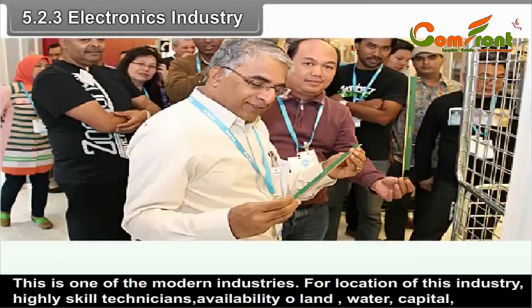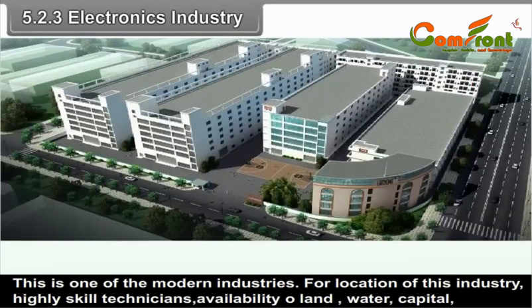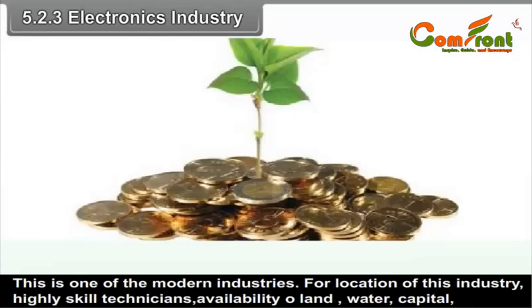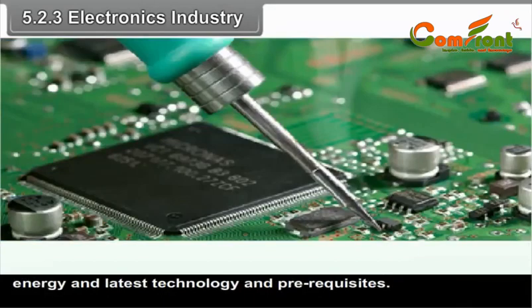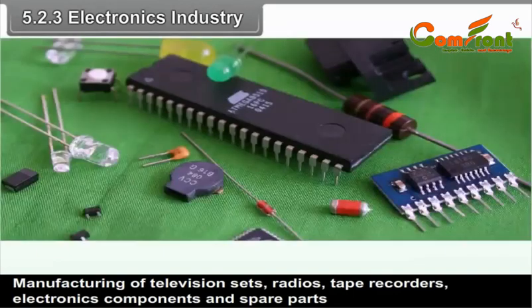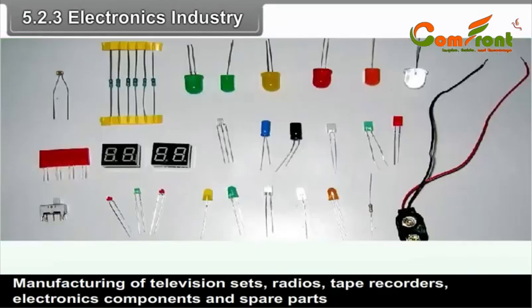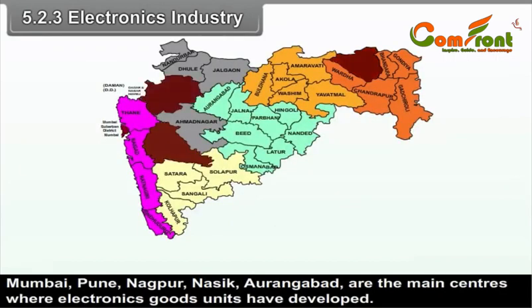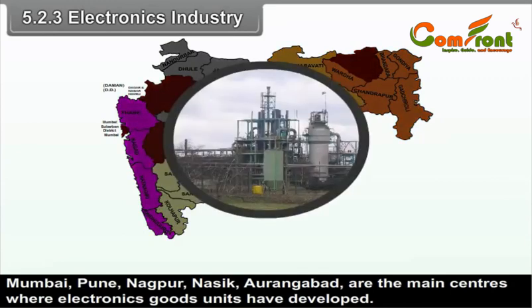5.2.3 Electronics Industry. This is one of the modern industries. For location of this industry, highly skilled technicians, availability of land, water, capital, energy and latest technology are the prerequisites. Manufacturing of television sets, radios, tape recorders, electronic components and spare parts come under electronic industry. Mumbai, Pune-Chinchwad, Nagpur, Nasik and Aurangabad are the main centres where electronics goods units have developed.